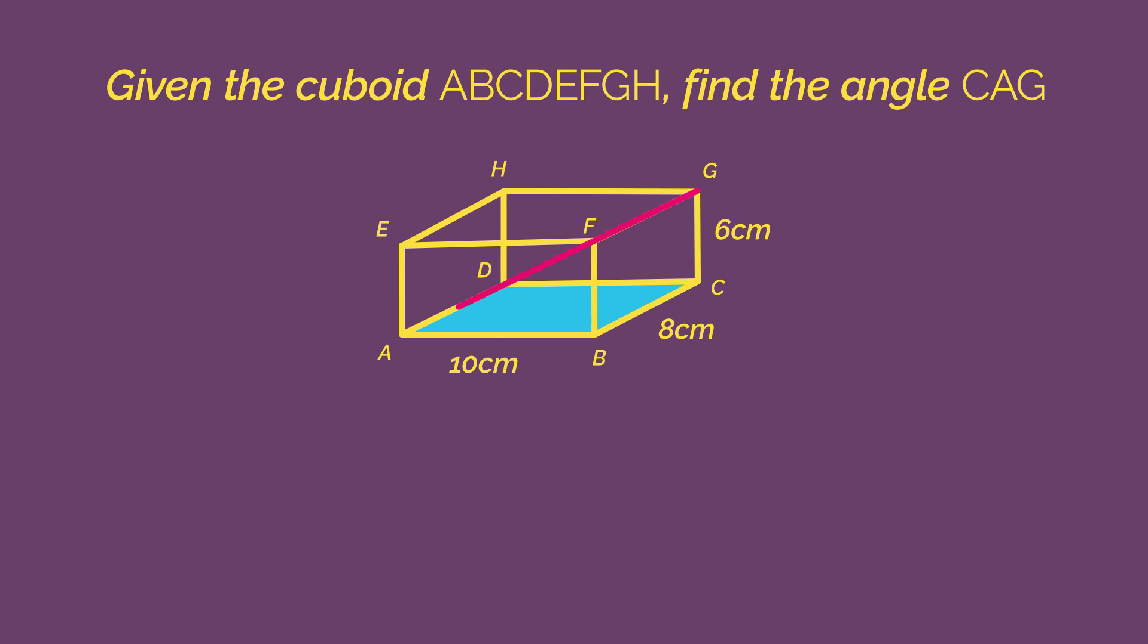Start by drawing your 2D right angle triangle CAG. We know it's a right angle because CG is a vertical line and CA is a horizontal plane. Before we can find angle X, we need to find the length of AC.